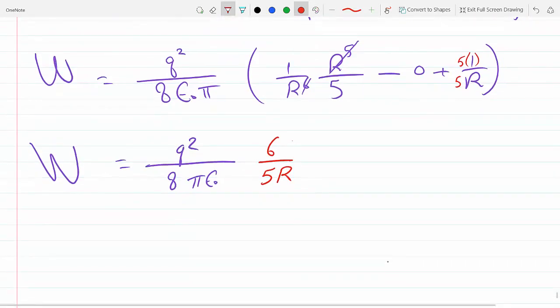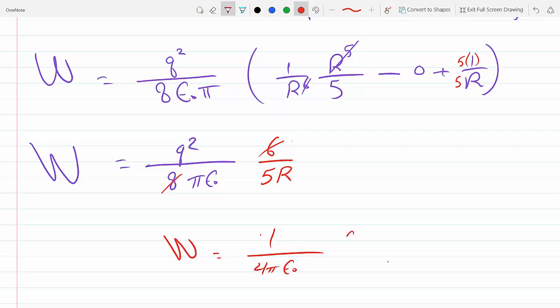If we simplify, the final answer will be 1 over 4πε_0 times Q² times 3 over 5R.